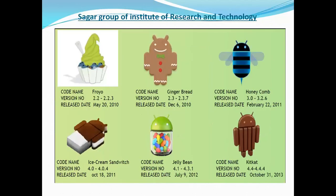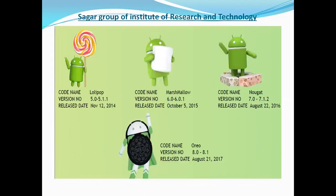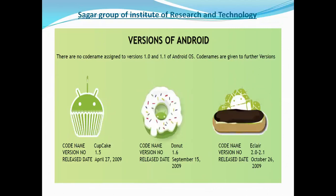The versions continue with Froyo, then Gingerbread, then Honeycomb, then Ice Cream Sandwich, then Jelly Bean, then Kit Kat, then Lollipop, then Marshmallow, then Nougat. Here we can see the different types of versions of Android programming, all named alphabetically.